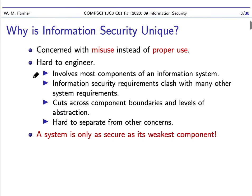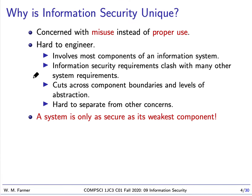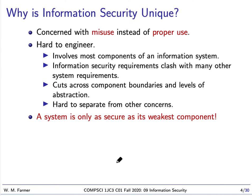Information security is unique compared to other concerns in computing. It's unique because it's concerned with misuse instead of proper use. Most things we're concerned about in software, like how you maintain software, are concerned about proper use. So information security is different, and this makes it hard to engineer. It also involves most of the components of information systems — you can't just develop one component; you have to look at all the components.